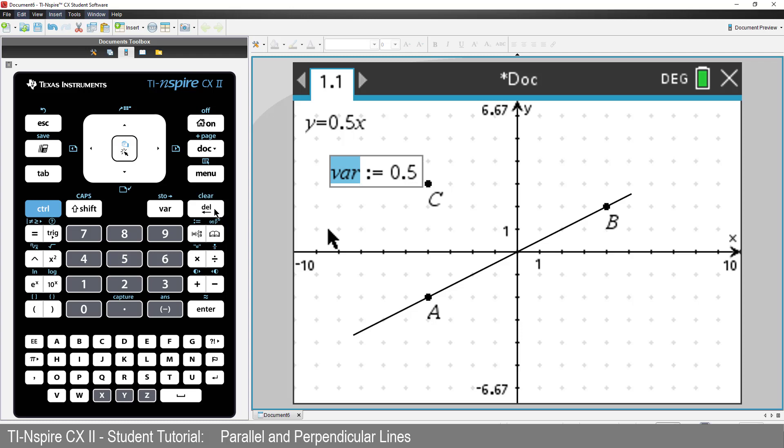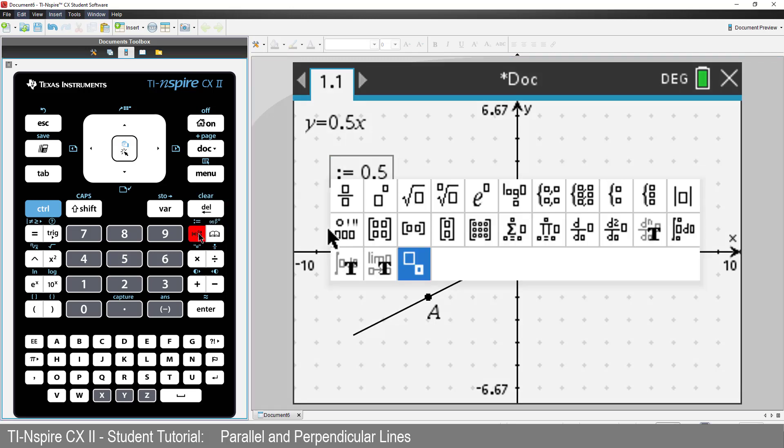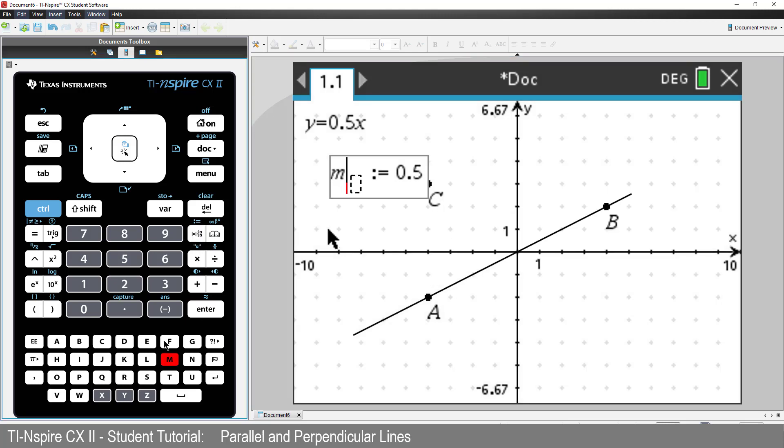Select Store. Delete the default variable name. And then use the math templates and select the subscript tool. We'll store the gradient as M1.